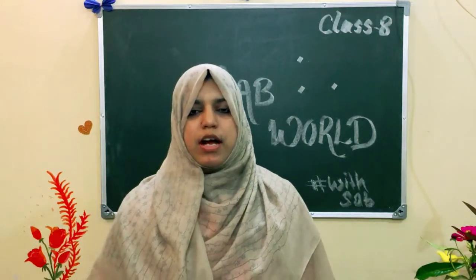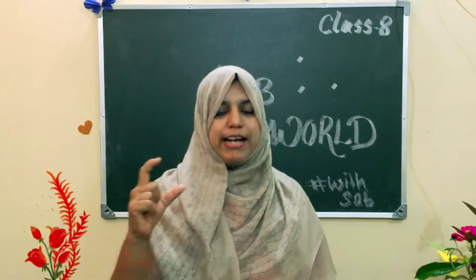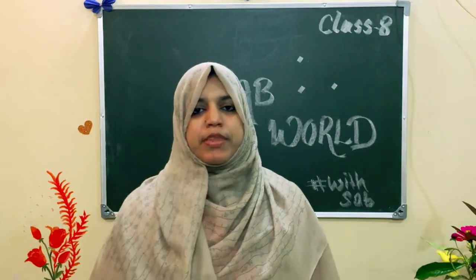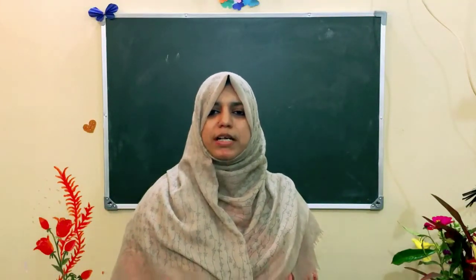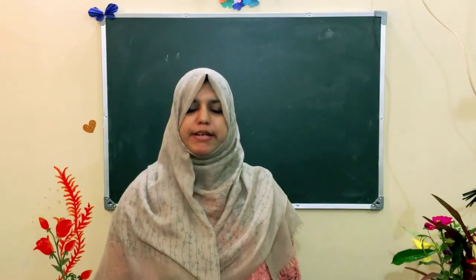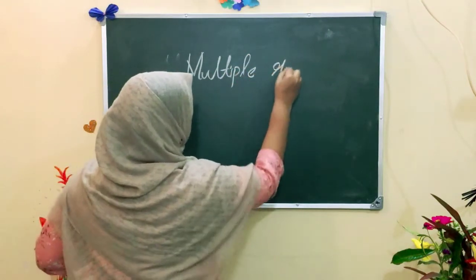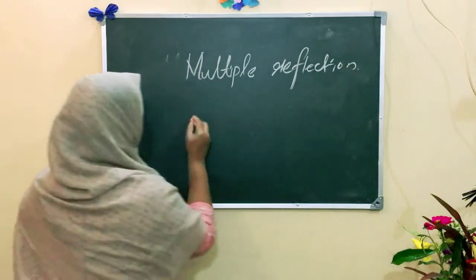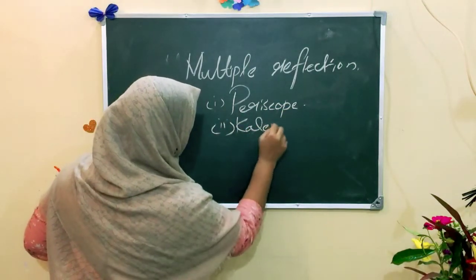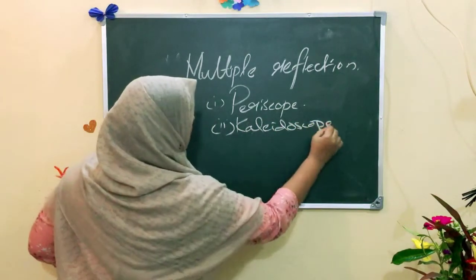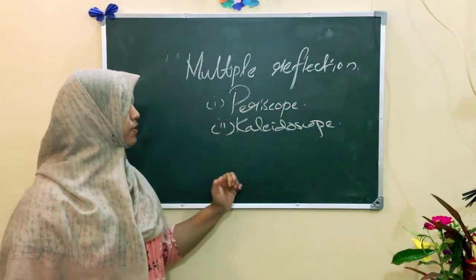Now here we are going to discuss about multiple reflection. When two or more mirrors are inclined to each other, they give multiple images — this is multiple reflection of light rays. Some instruments that make use of multiple reflections are the kaleidoscope and periscope, and these devices work on the basis of multiple reflections.